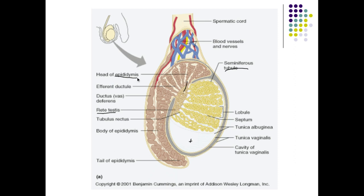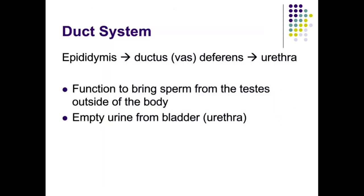After the rete testis, sperm move into the epididymis, where they are pushed via peristalsis and go through sperm maturation. When sperm are produced in the seminiferous tubules, they don't yet have a head, midpiece, and tail — they are very juvenile. The spermatic cord holds the vas deferens, nervous supply, and blood vessels. The venous blood supply wraps around the arterial supply to cool blood entering the testes and create the optimal temperature for sperm production.